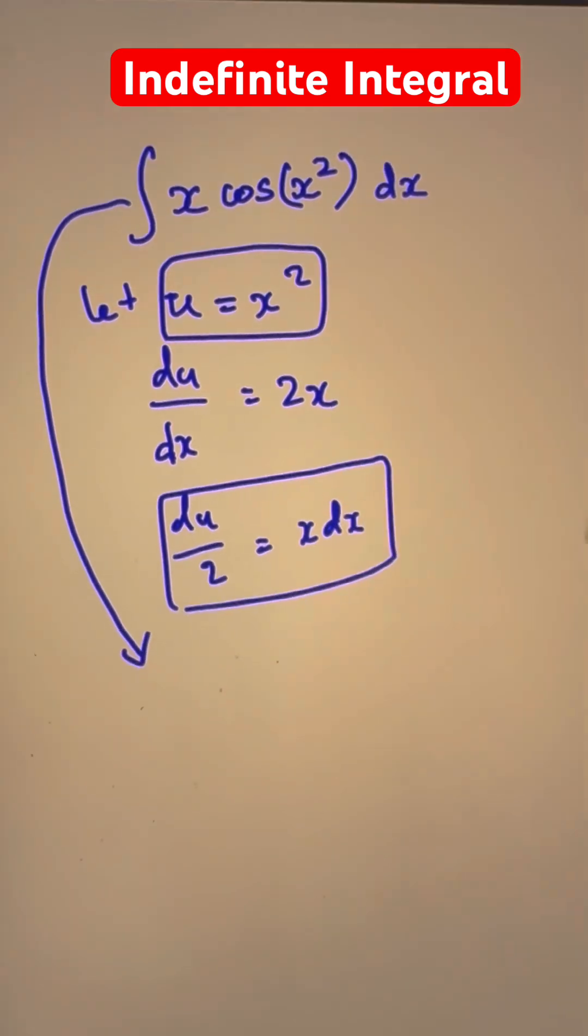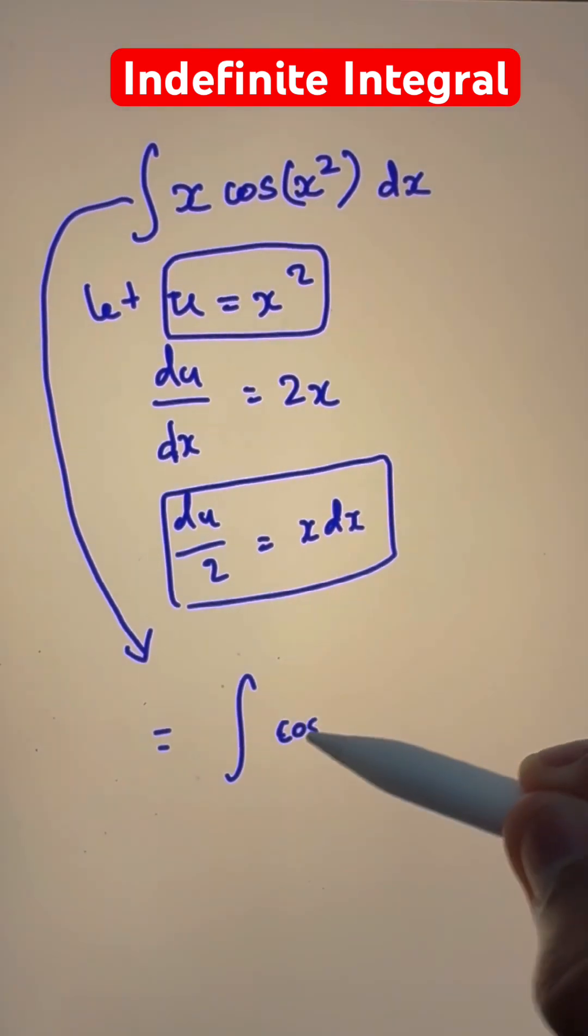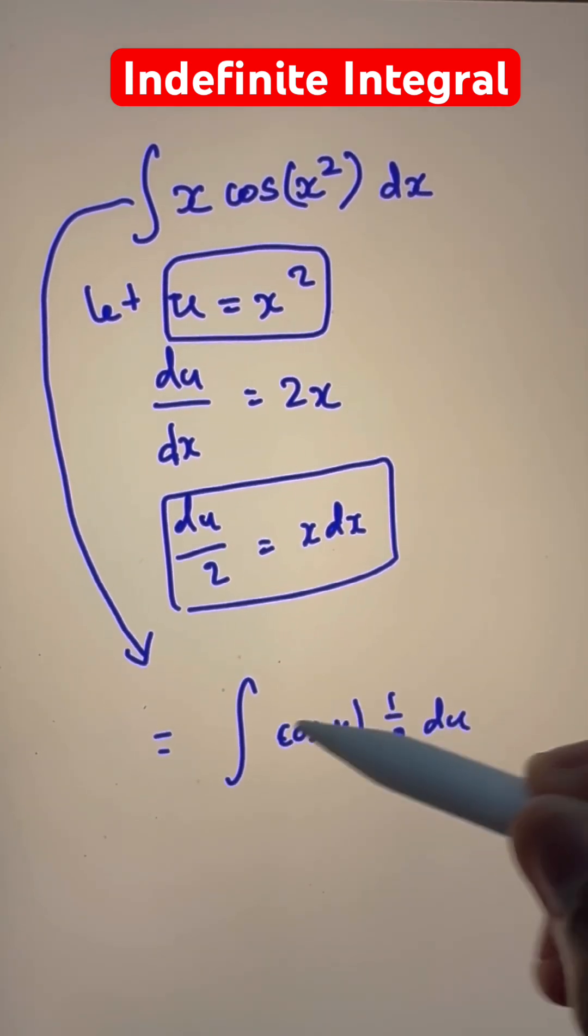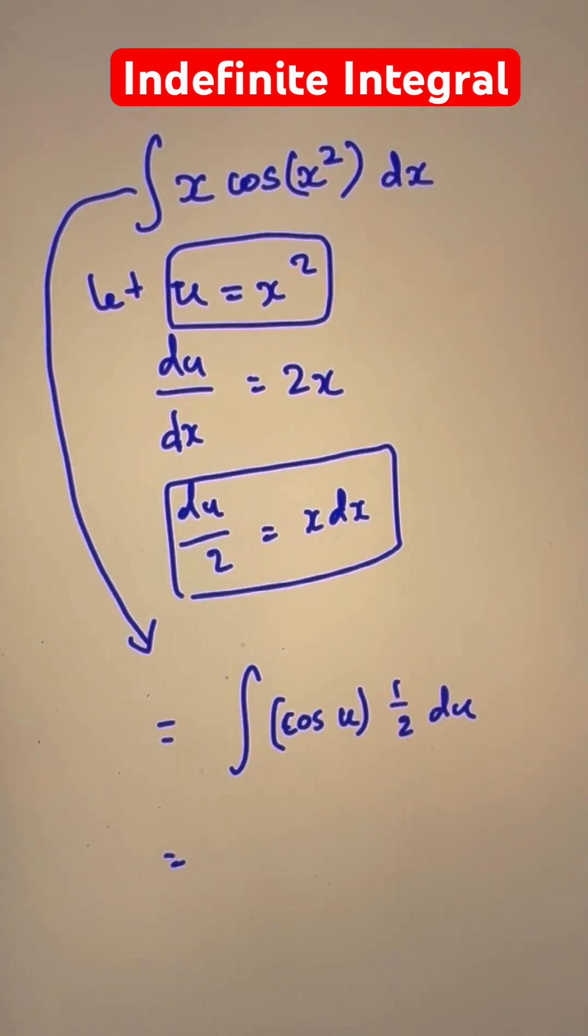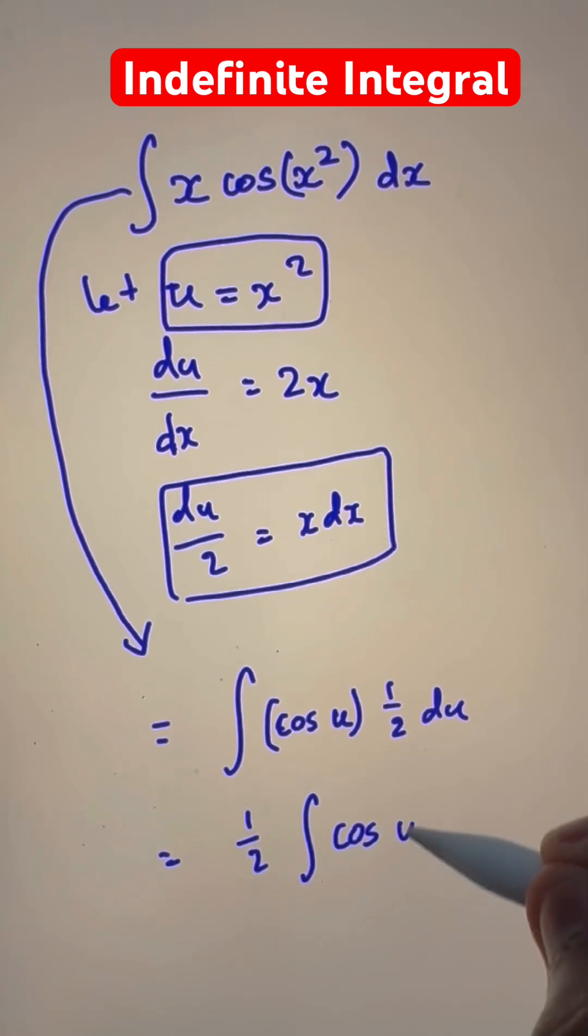So we get this as the integral of cosine of u times half du. And now this will simply be multiplying the constant outside the integral. We get half times the integral of cosine of u du.